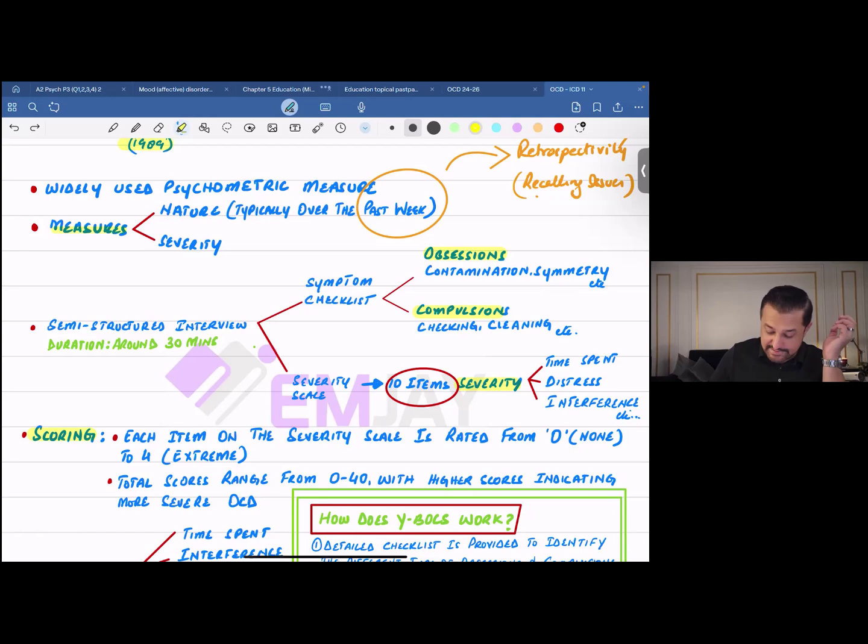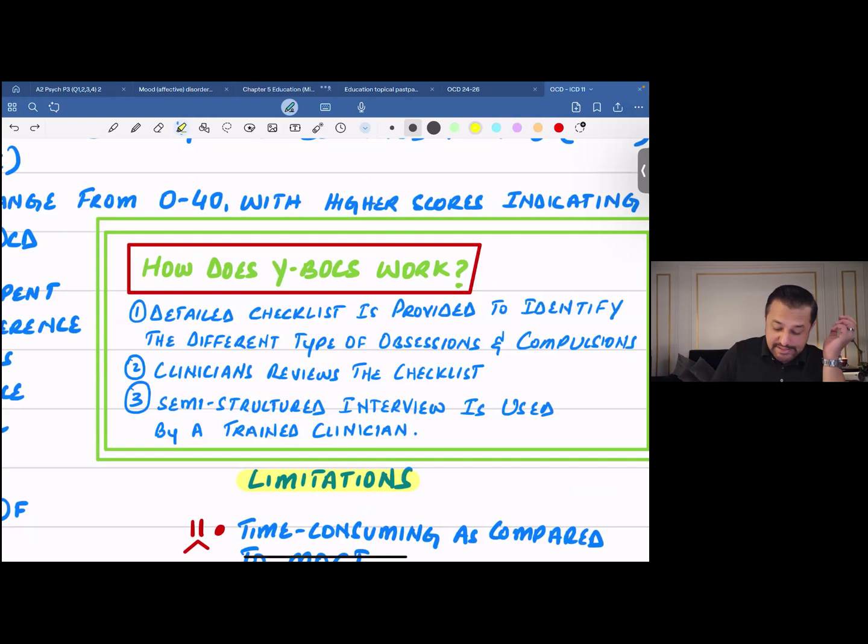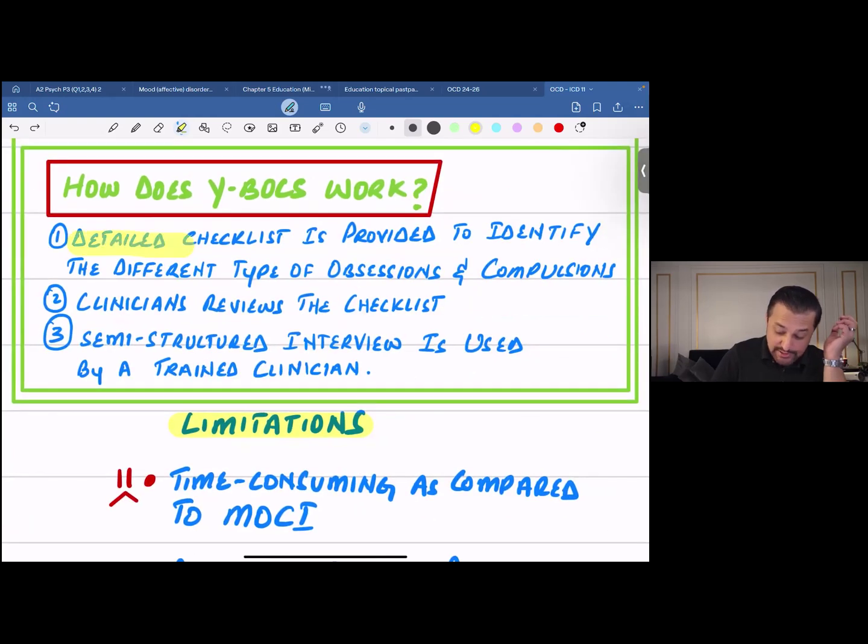How does YBOCS work? Initially, there's a detailed checklist provided to identify the different types of obsessions and compulsions. There's a detailed checklist provided to the patient to identify the different types of obsessions and compulsions they might be experiencing, followed by the clinician reviewing that checklist, followed by a semi-structured interview used by a trained clinician.